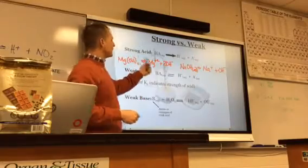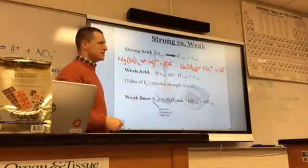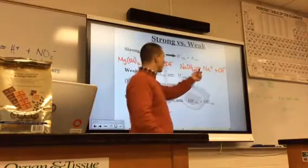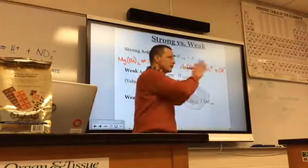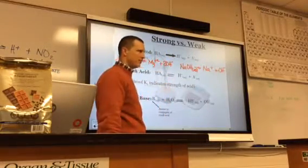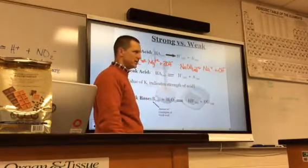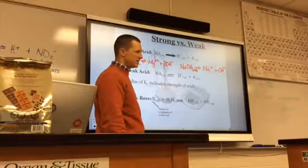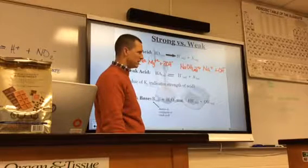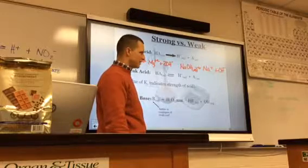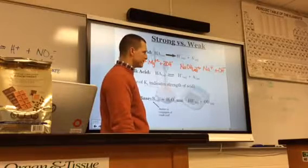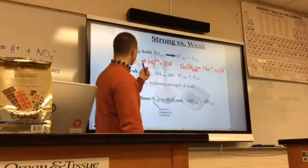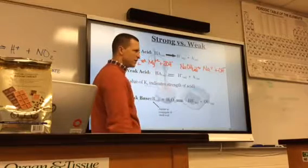There's the difference between strong base and weak base, and it's all about the arrow. If you have a one-way arrow, this thing goes to completion — it doesn't stop until it's done. MgOH2 is a weak base because of that equilibrium arrow. And that's all the determinant.